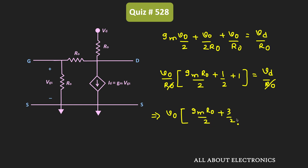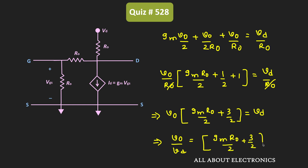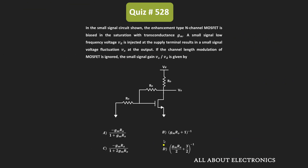Further simplifying, we get: v0 times (gm·r0/2 plus 3/2) equals vd, so the voltage gain vo divided by vd equals 1 divided by (gm·r0/2 plus 3/2). This is the expression for the equivalent small signal gain of the given circuit, and from this we can identify the correct answer option.